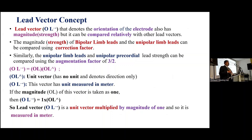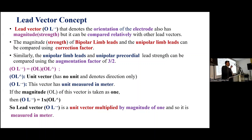The magnitude of the bipolar limb leads and unipolar limb leads can be compared using the correction factor. Similarly, unipolar limb leads and unipolar precordial lead strength can be compared using the augmentation factor 3/2. The OL vector equals OL magnitude times the OL unit vector, where the unit vector has no unit and denotes only direction. The OL vector is a vector measured in meters. The lead vector denotes the orientation of the electrode and is measured in meters.